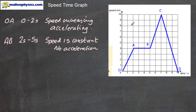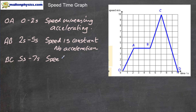Then we have a steep climb from B to C in the graph, lasting from five seconds to seven seconds. We can see that the speed has increased, so once again we interpret this as the speed of the object increasing. The other way we describe that is the object is accelerating — so there is acceleration taking place from B to C.